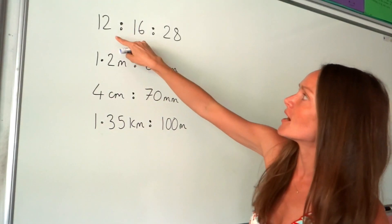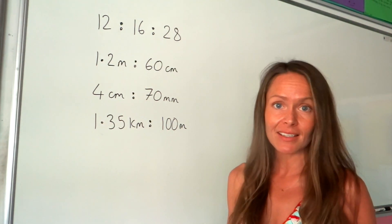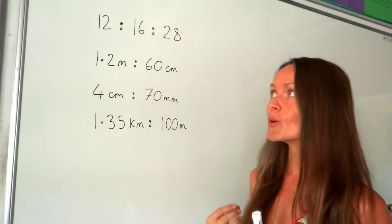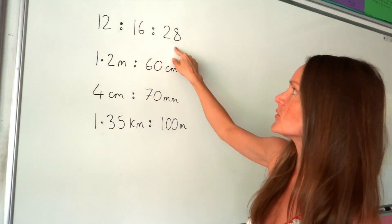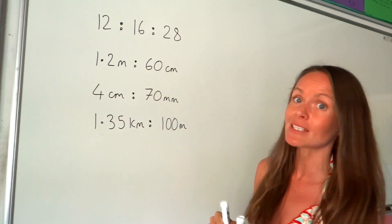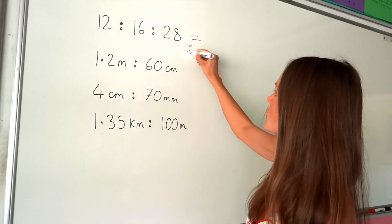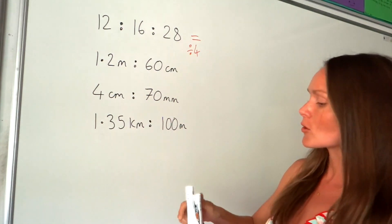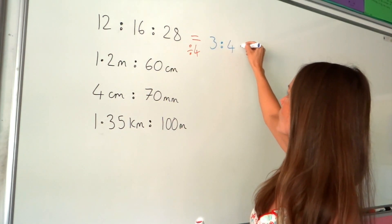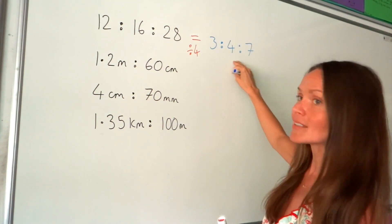In this top question, we've got three numbers in our ratio, but the method is exactly the same. You've got to find the highest common factor — a number that fits exactly into all numbers, and the biggest one. The highest common factor here is 4, so we divide all three numbers by 4. 12 divided by 4 is 3, 16 divided by 4 is 4, and 28 divided by 4 is 7.